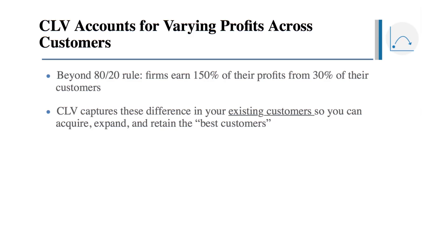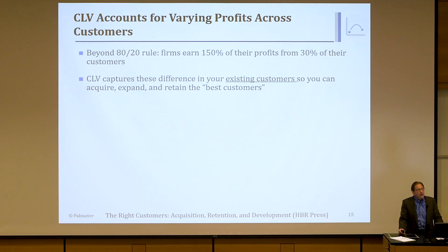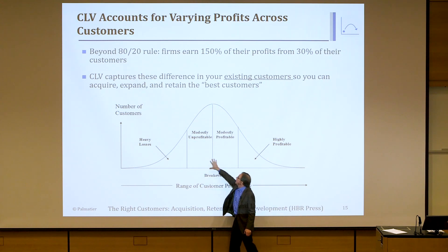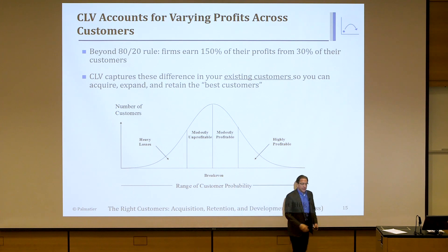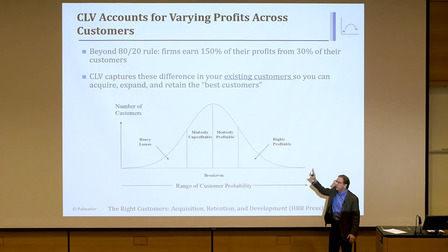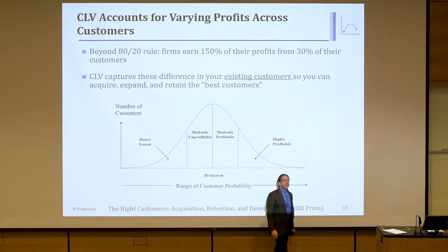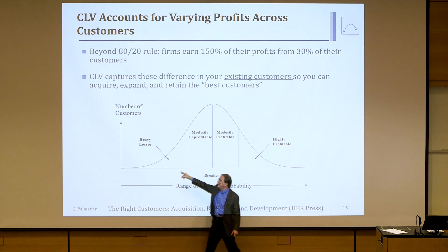Going beyond the 80-20 rule — an industry-wide analysis published in Harvard Press found it was actually the 150-30 rule: firms earn 150% of their profit from 30% of their customers. How is that possible? You have a lot of customers you're losing money on. CLV lets you take this into account at the individual level. If I told you your average customer earned $10,000, you might think every customer earns that — but that's misleading. Some customers you might earn hundreds of thousands of dollars from; others you might be losing $100,000 on.